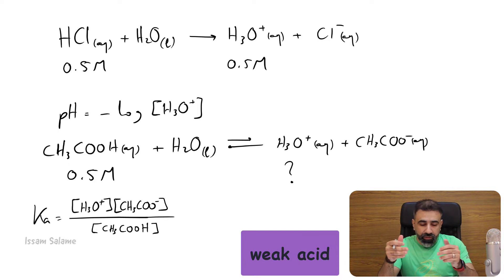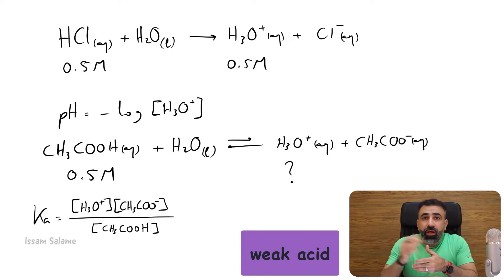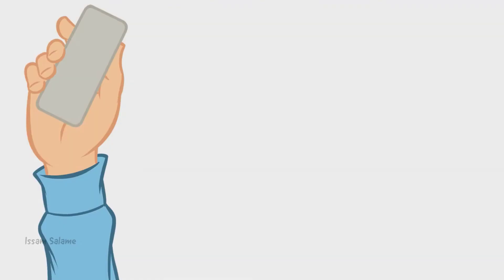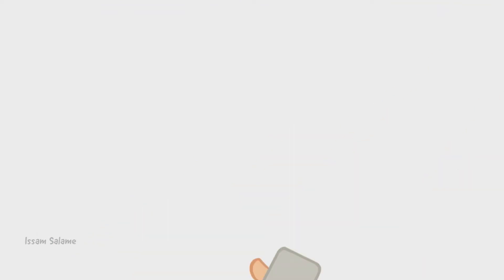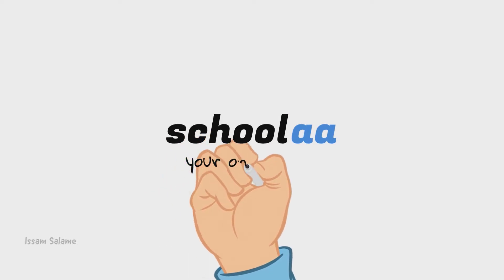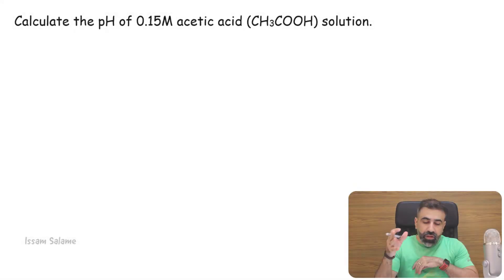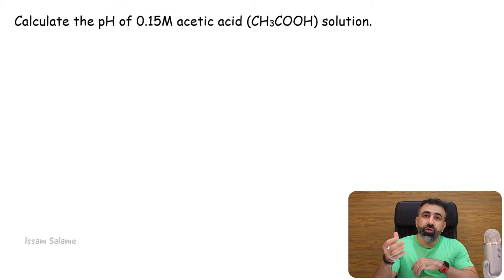So we have the constant of equilibrium, Ka, and the concentration of the acid at equilibrium. Then we can find the concentration of hydronium, and later we can find the pH. Let's have an exercise. Calculate the pH of a 0.15 molar acetic acid solution. Acetic acid is a weak acid, so it's going to dissociate partially as follows.